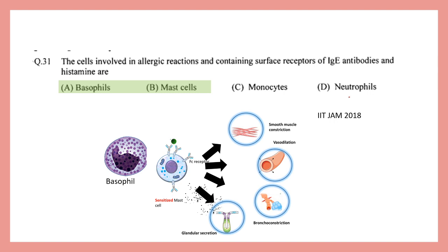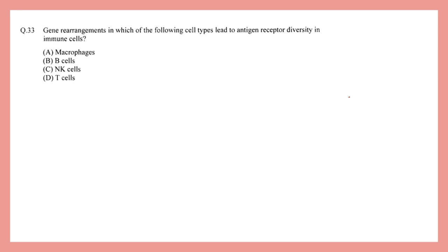If you want to learn more about type I hypersensitivity response, you can click the 'i' button. Another similar question: gene rearrangement in which of the following cell types leads to antigen receptor diversity — macrophages, B cell, NK cell, or T cell? B cells express B cell receptor or antibody, so VDJ recombination is important for that. The key point is that T cells also undergo VDJ recombination in their T cell receptor.